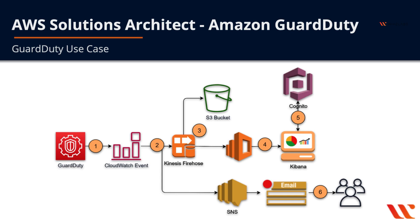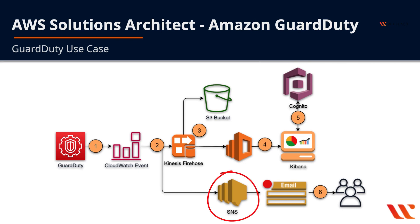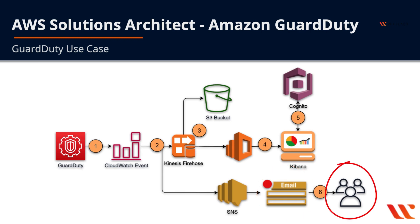In step five, we provide secure authentication to Kibana using Cognito User Pools. In step six, the second CloudWatch event target is SNS, which has subscribed email endpoints allowing an operations team to receive emails or SMS messages when a new GuardDuty event is received. This use case shows how to produce insights using Kibana and Elasticsearch, send alerts on significant security events, and store GuardDuty data in S3 for ad hoc querying with Athena.